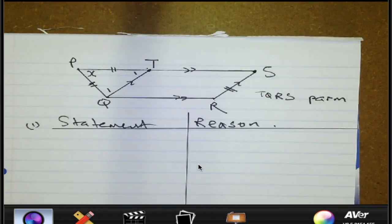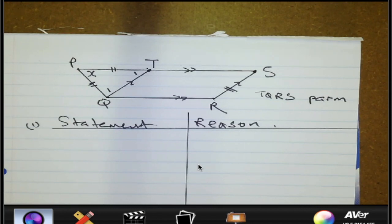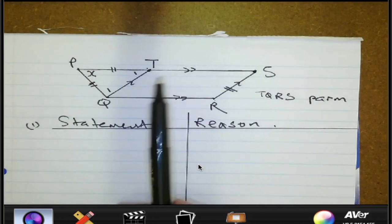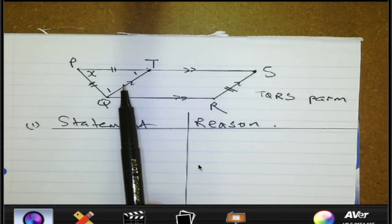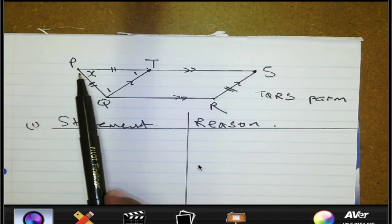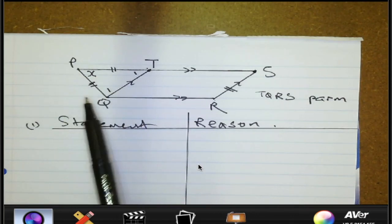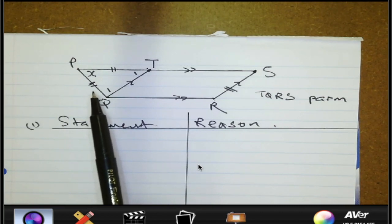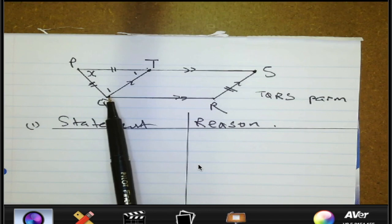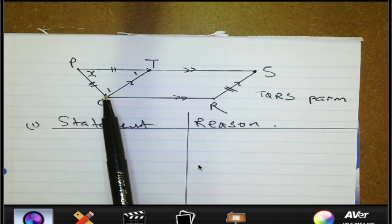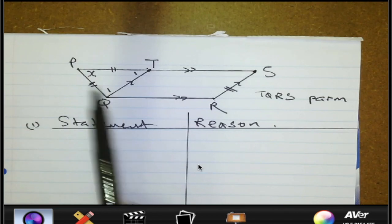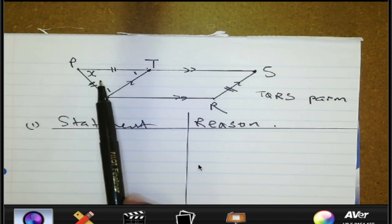Where do we start? A student suggests we need to prove that triangle PQT is equilateral. If it is equilateral, then we know that X is 60 degrees.